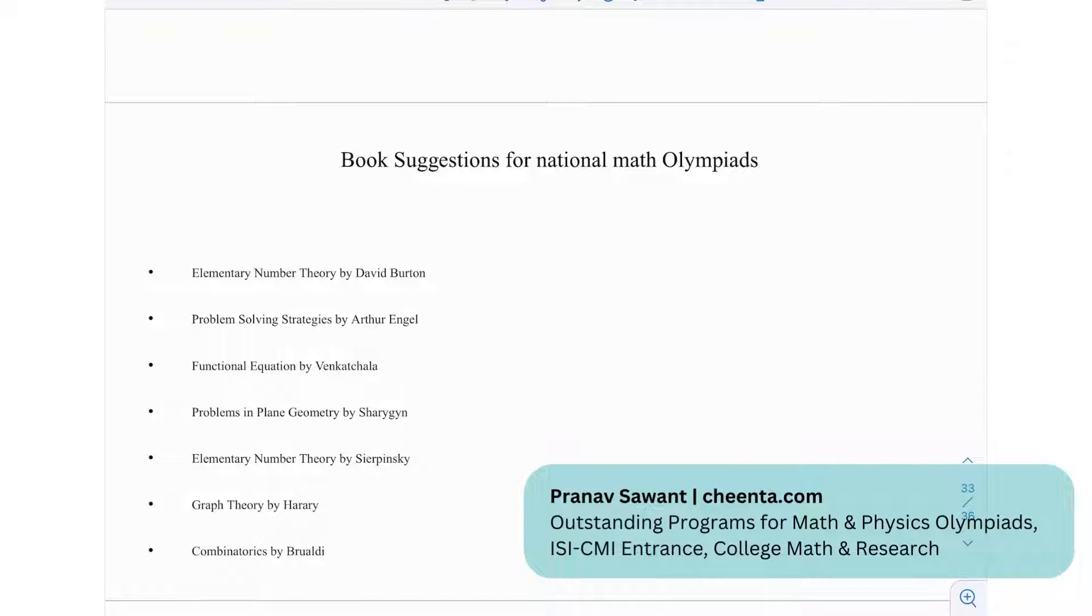Moving on, we've seen book suggestions for National Math Olympiads: Elementary Number Theory by David Burton, Problem Solving Strategies by Arthur Rangel, Functional Equations by Venkata Chala, Problems in Plane Geometry by Sharigan, Elementary Number Theory by Sierpinski, Graph Theory by Harari, and Combinatorics by Bruvaldi.